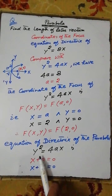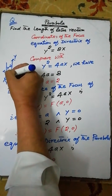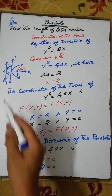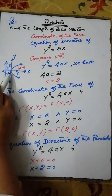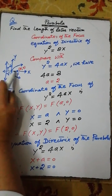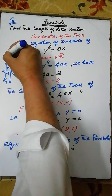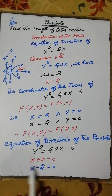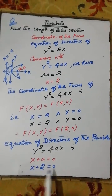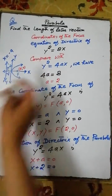The equation of the directrix of the parabola y squared equals 4ax is a straight line parallel to the tangent at the vertex, perpendicular to the axis of the parabola, passing through the point x equals minus a, which is also written as x plus a equals 0. That is, with a equal to 2, the equation of the directrix of the given parabola is x plus 2 equals 0.